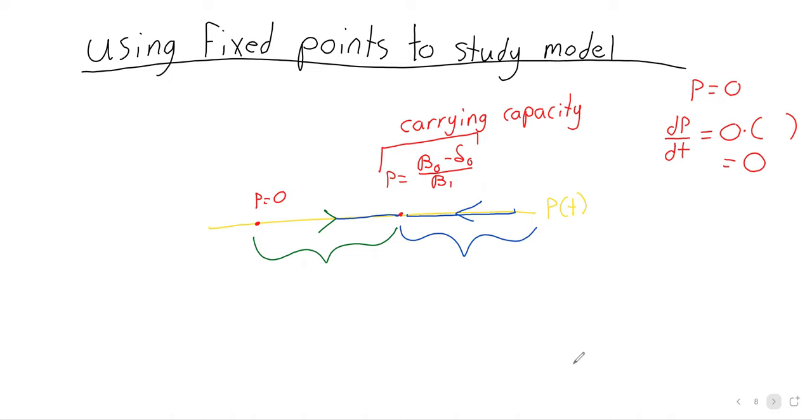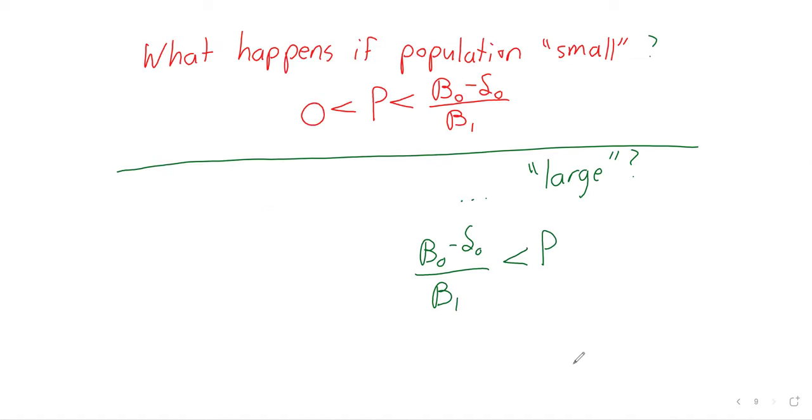Now we can solve the logistic model explicitly. It's not a cakewalk, but let's say for some country dP/dt equals kP times 200 minus P.